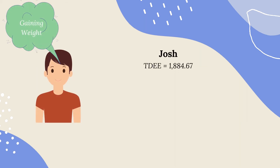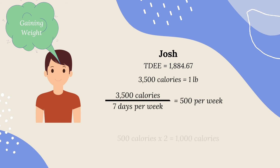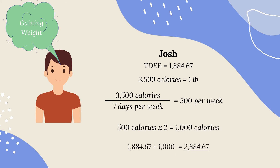Now let's move on to Josh. Josh is trying to gain weight. His TDEE is 1,884.67. Josh wants to speed up the process of his weight gain, so he will multiply the 500-calorie increment by two, adding 1,000 calories to gain two pounds per week. Adding 1,000 to his TDEE gives 2,884.67 — he will need to intake 2,884.67 calories each day to gain two pounds per week.